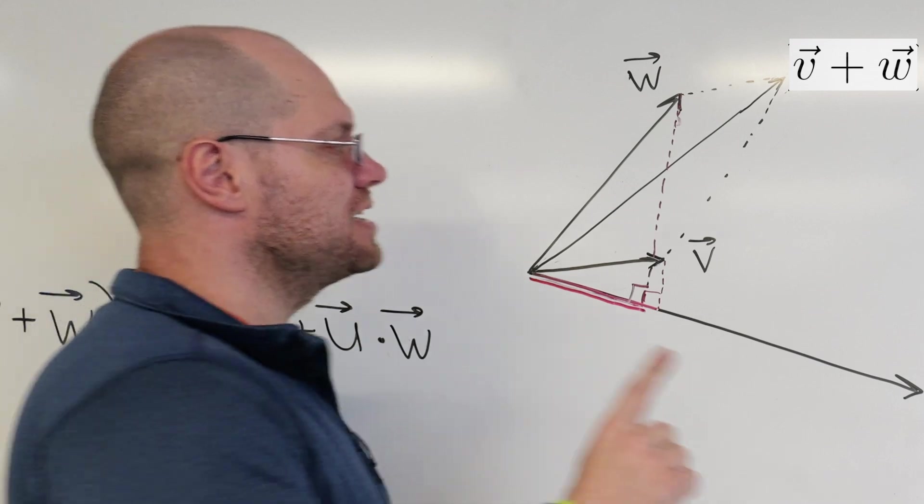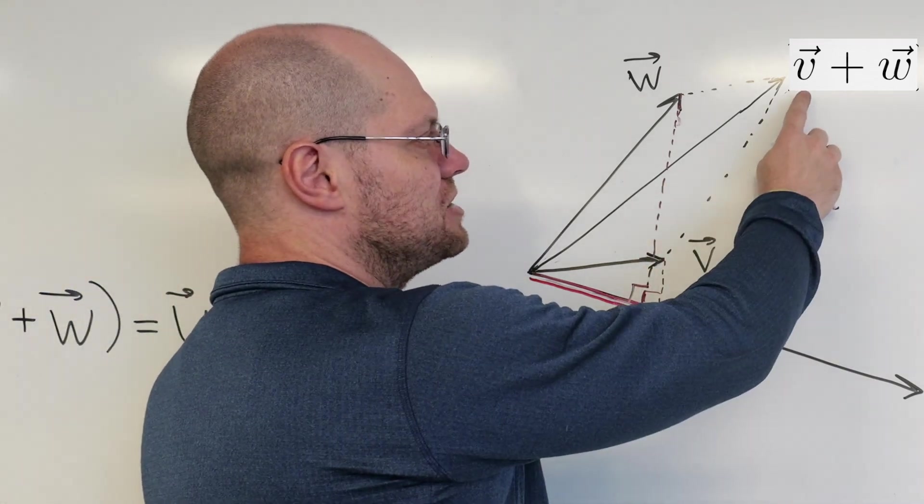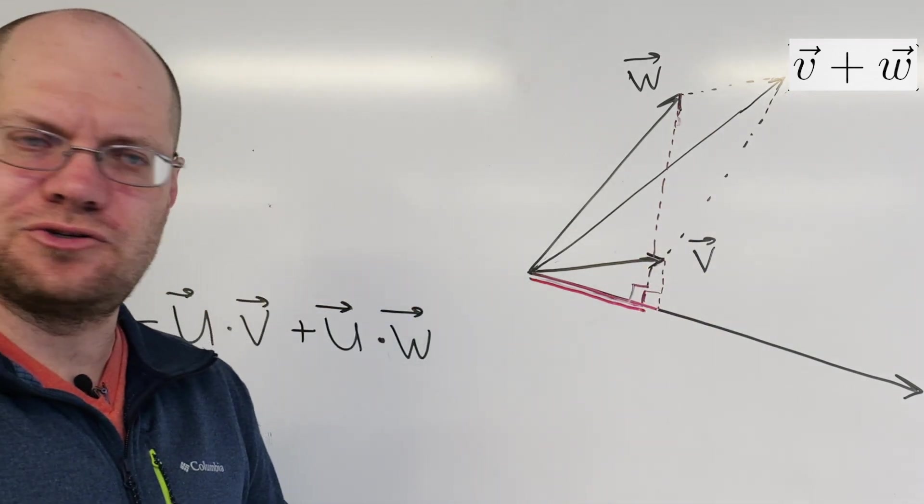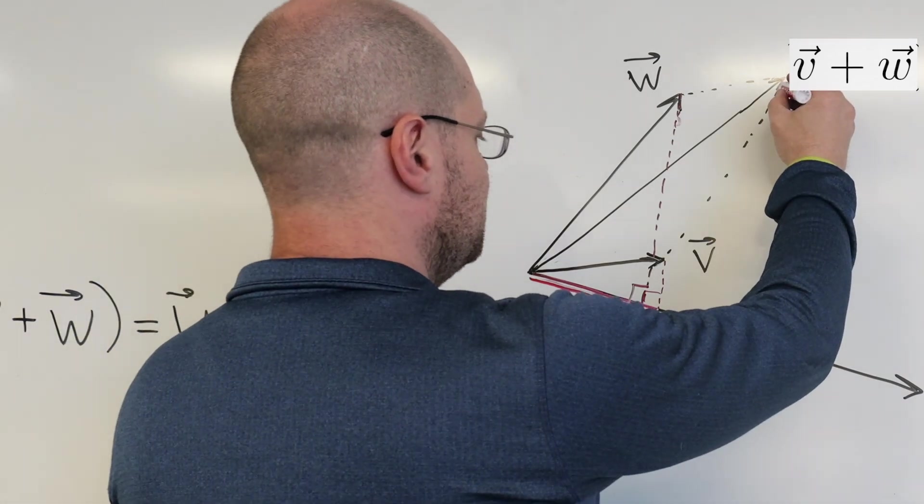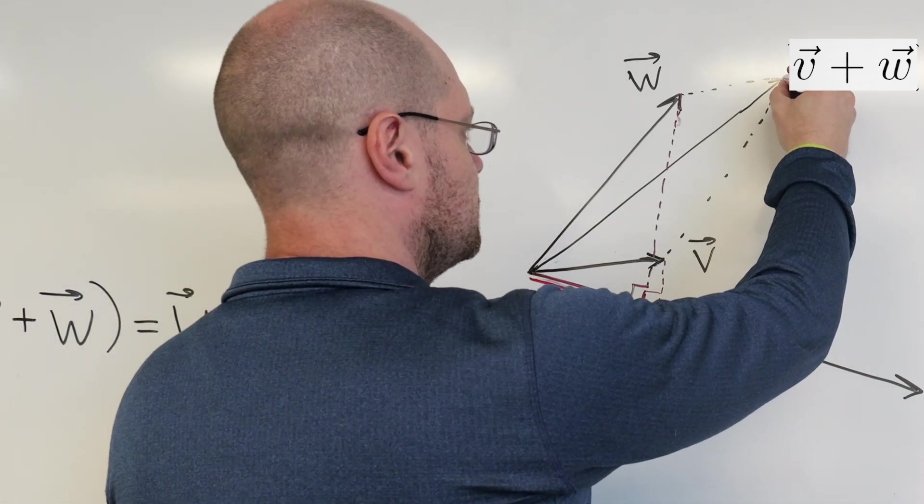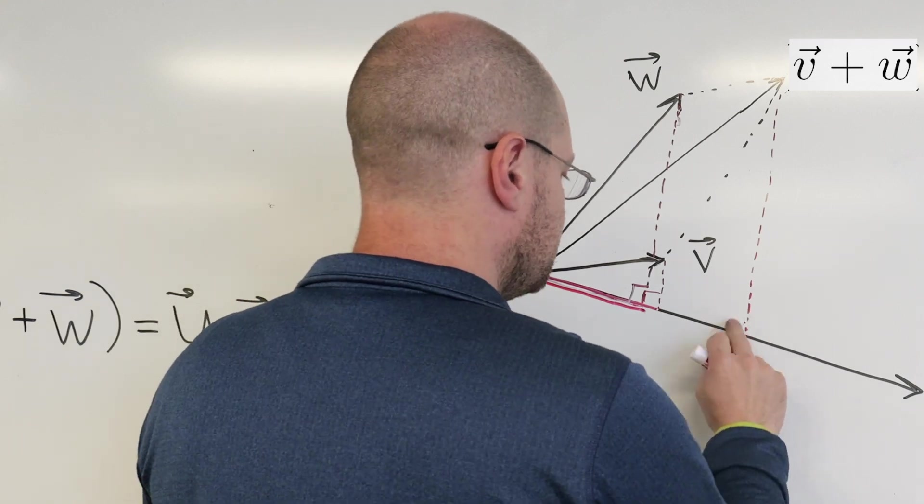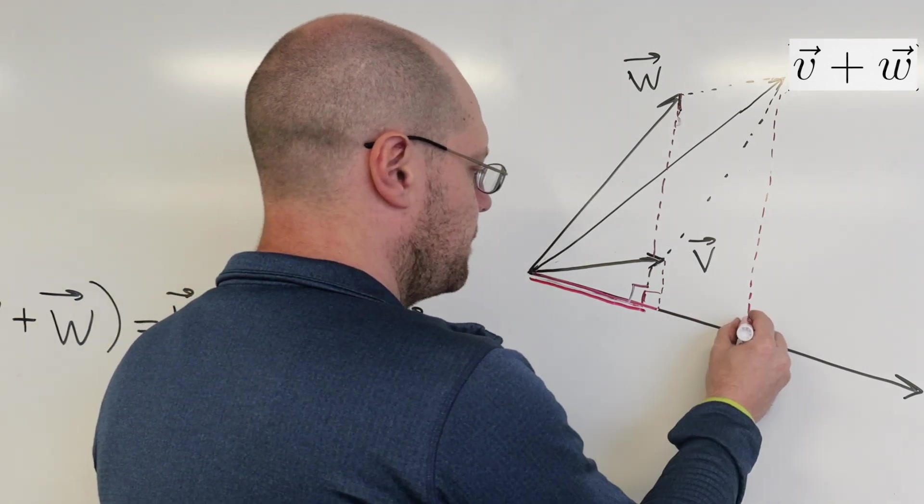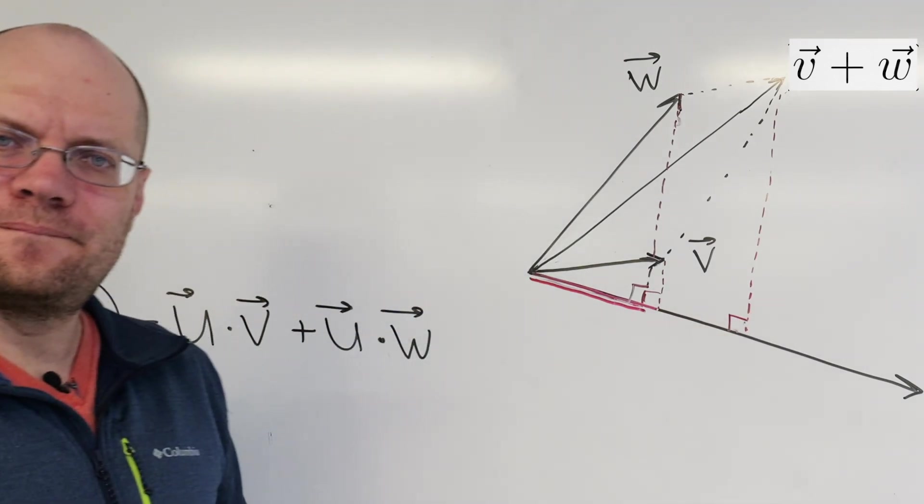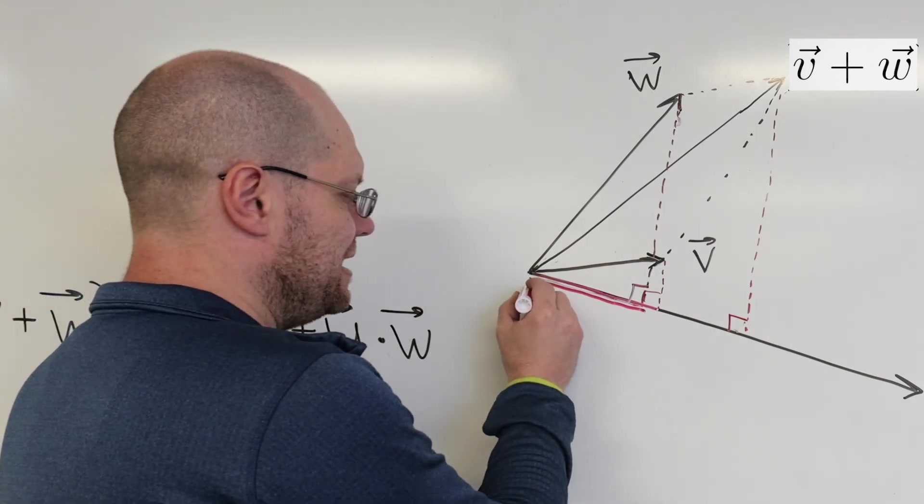This thing's like here. So the length of the projection of W onto U is just a little bit shorter than the projection of V onto U. And now let's look at the projection, or rather the length of the projection of V plus W onto U. Well, it's this construction. Okay?